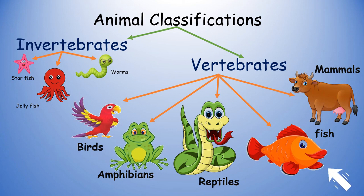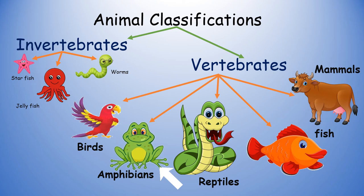Fish are the kind of animals that live in water, breathe with gills and usually have fins and scales. Examples are shark and goldfish.